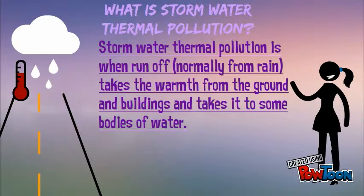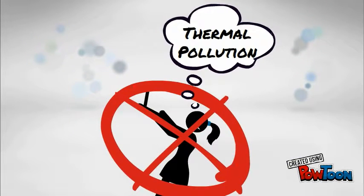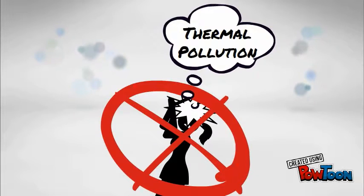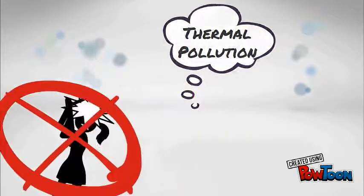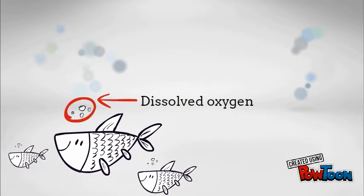Stormwater thermal pollution is when runoff takes the warmth from the ground and buildings and carries it to bodies of water. Thermal pollution is caused when impervious surfaces get hot, then the runoff flows over them, collecting the warmth, and usually flows to the nearest body of water.